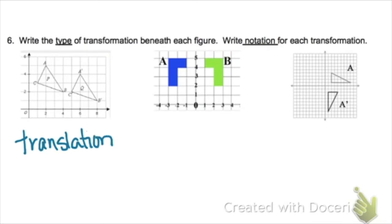On this one you have a translation. Your notation is, this has been translated 4 to the right and 1 down.